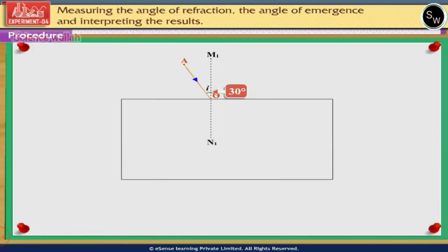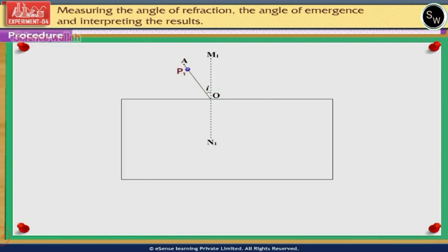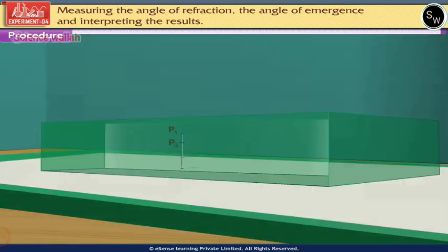Ray AO is called the incident ray. Fix pins P1 and P2 on ray AO such that the pins are vertical and well separated. Now replace the glass slab properly in its original position.